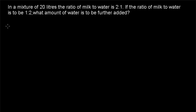Today's question is: in a mixture of 20 liters, the ratio of milk to water is 2 is to 1. So for every 2 parts of milk, there will be 1 part of water.